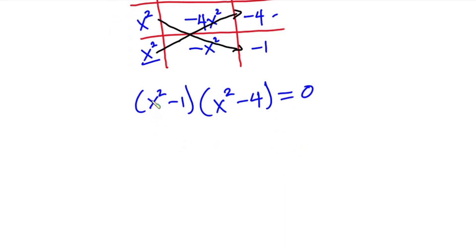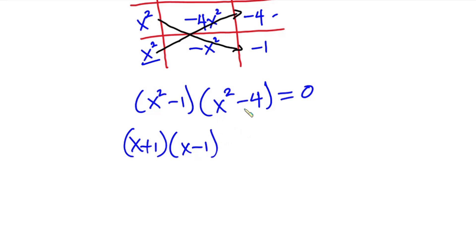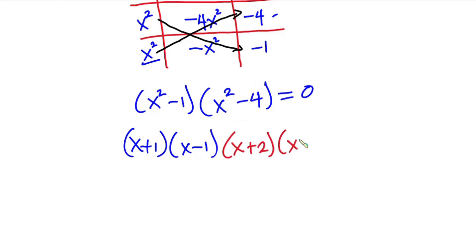Both of these are differences of two squares. For x squared minus 1: since 1 equals 1 squared, this factors as (x plus 1)(x minus 1). For x squared minus 4: since 4 equals 2 squared, this factors as (x plus 2)(x minus 2). So the full factored form is (x plus 1)(x minus 1)(x plus 2)(x minus 2) equals zero.